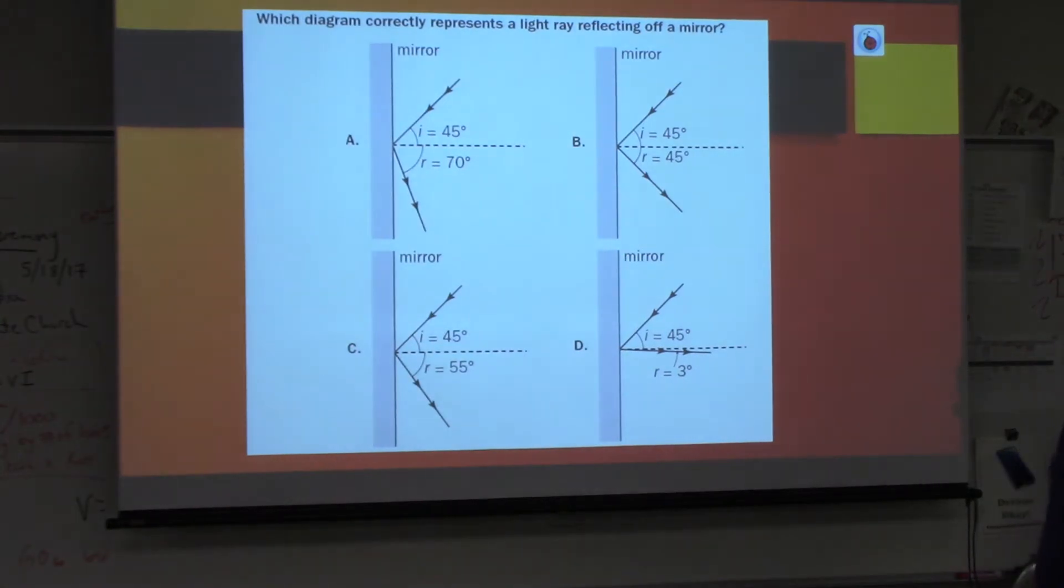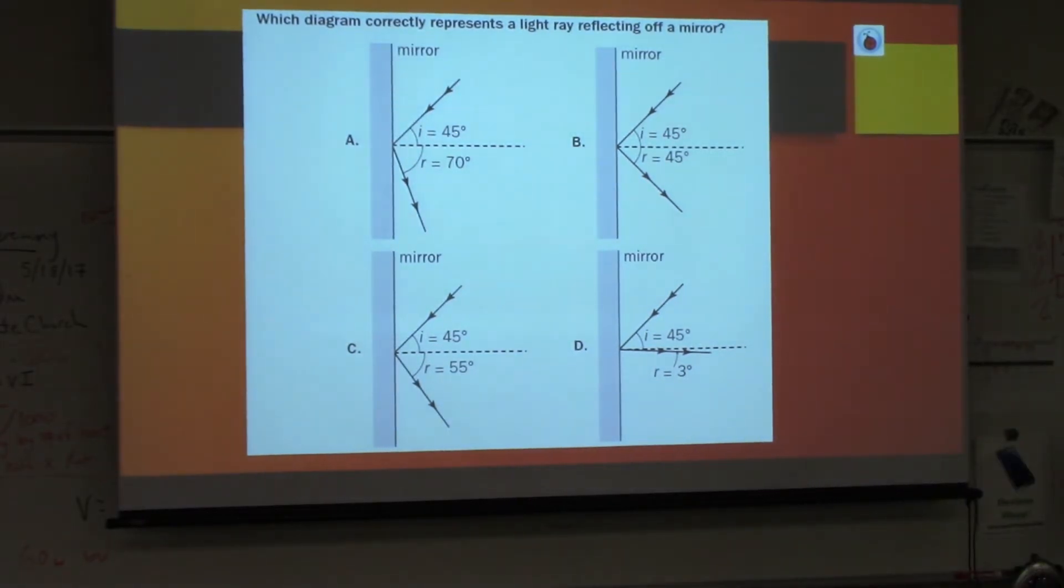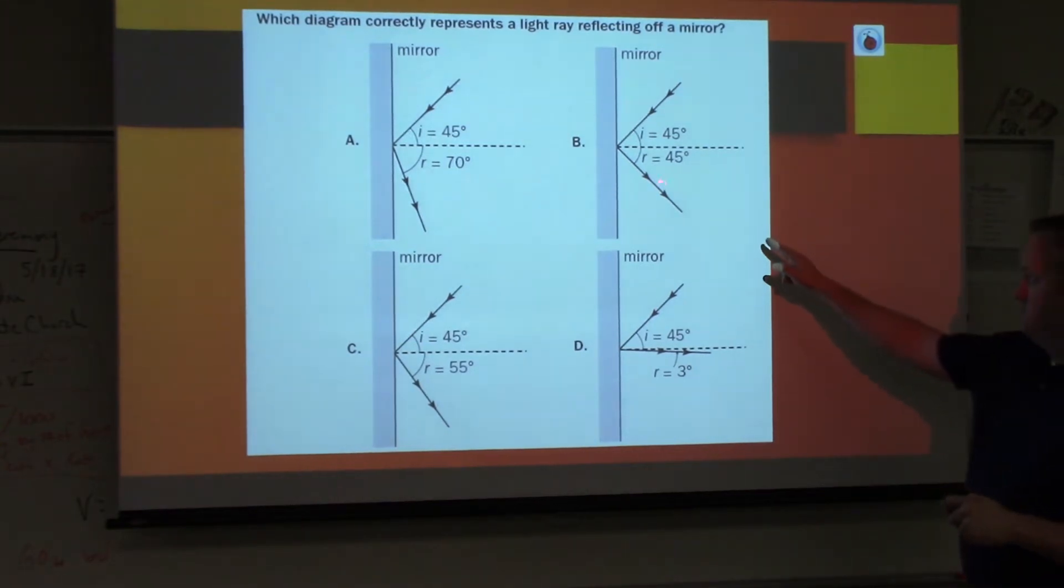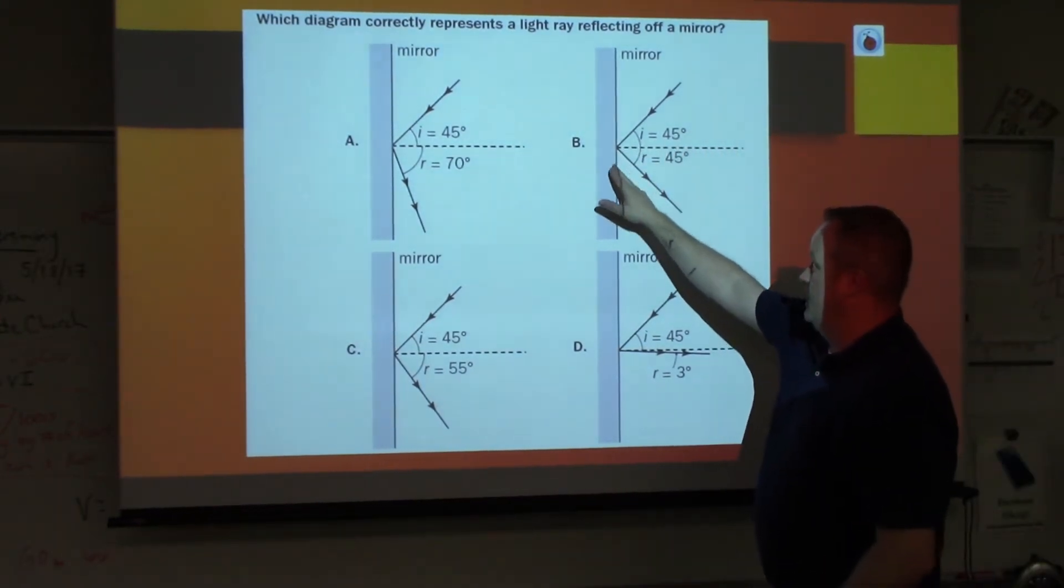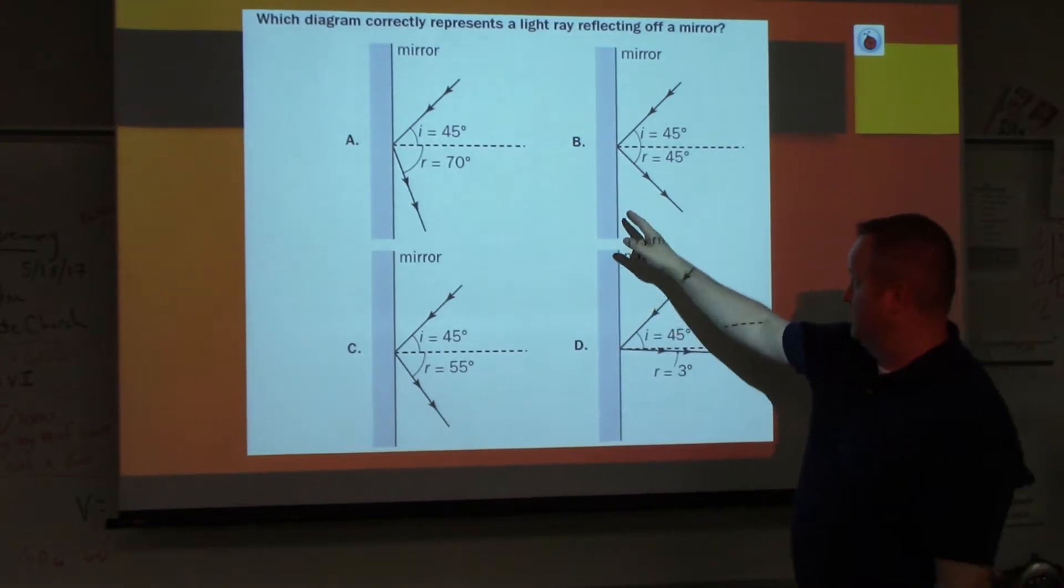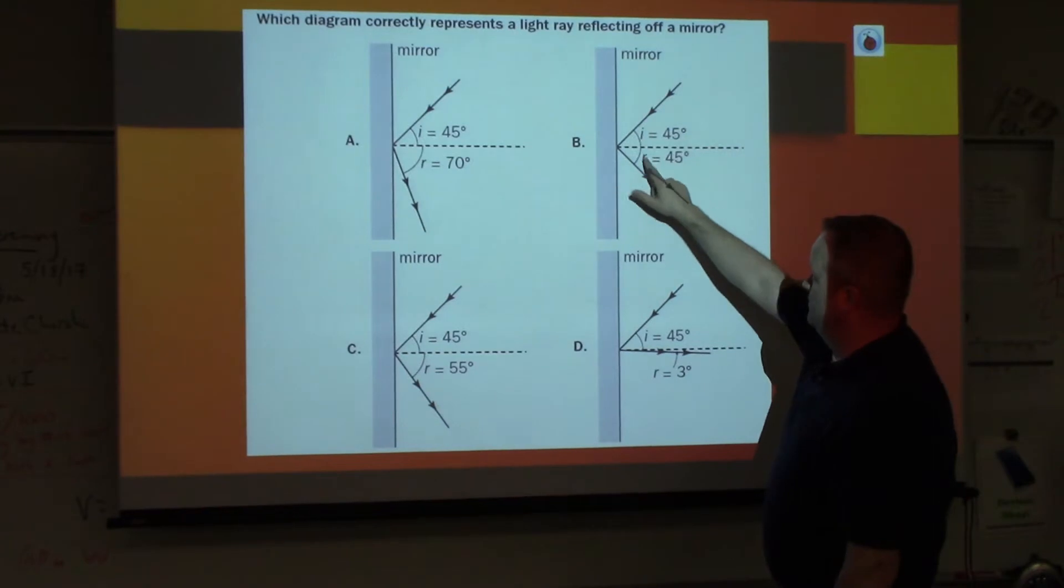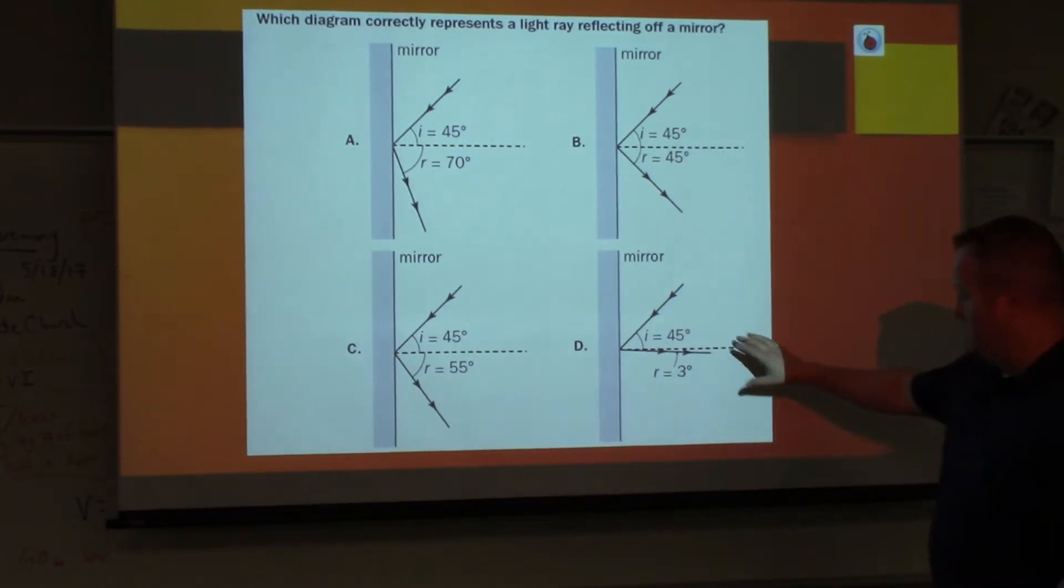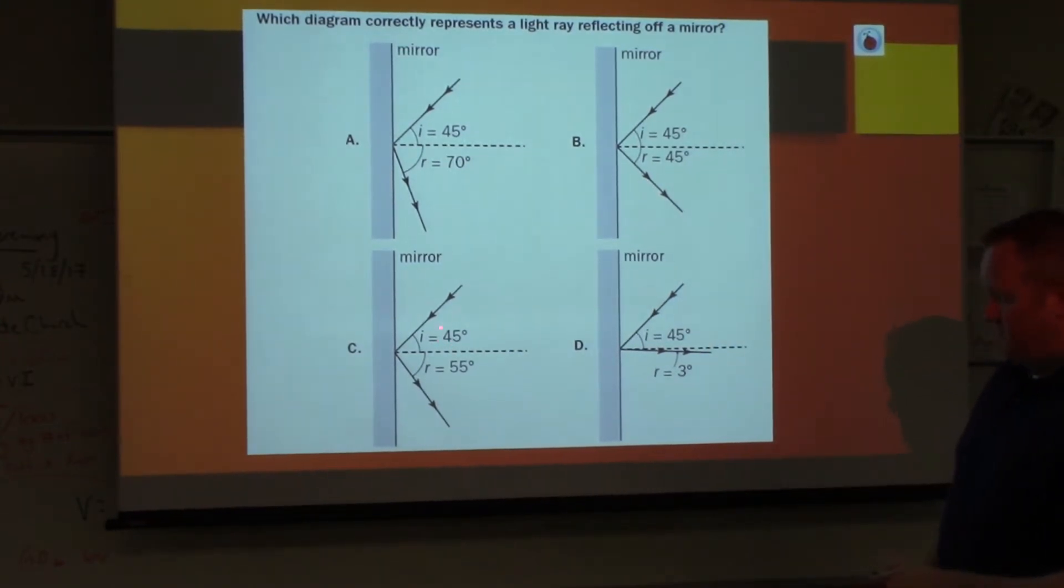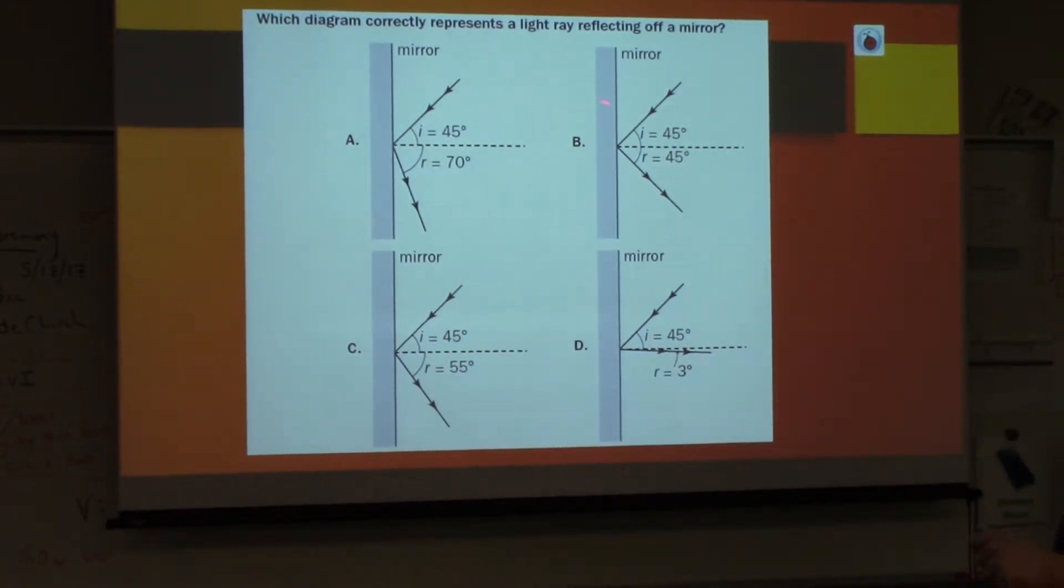Here is a sample question. Take a second to look at that and think about what the correct answer should be. For this answer, you should definitely choose B. The reason you should choose B is because as you see the line bisecting and hitting the reflective surface perpendicularly, you have 45 degrees as a measurement of both the angle of incidence and reflection. The other three sample choices all have numbers that are not the same. So the only answer choice you should have chosen is B.